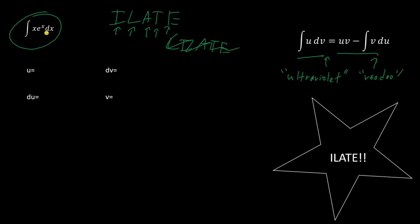In our integral, there aren't any inverse trig functions or logarithmic functions, but we do have an algebraic one here. So that's what we're going to use for our u. Our du, therefore, is 1 dx or just dx. The rest of the function is the dv part. So e to the x dx is dv. V is the integral of this or e to the x.